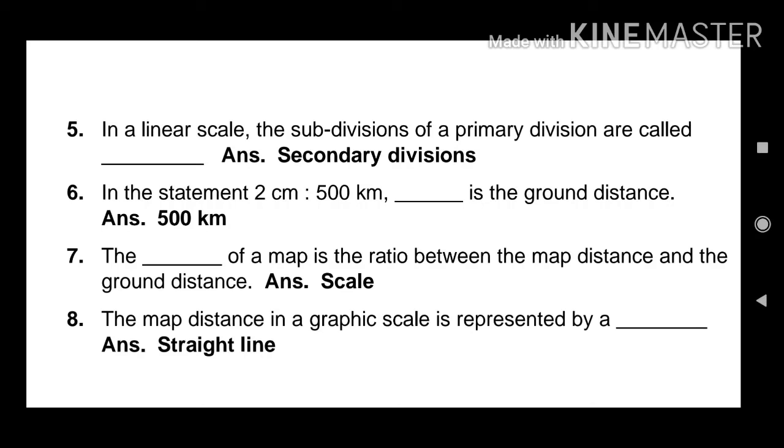In the statement, 2 cm is to 500 km. Dash is the ground distance. Answer. 500 km. The dash of a map is the ratio between the map distance and the ground distance. Answer. Scale.